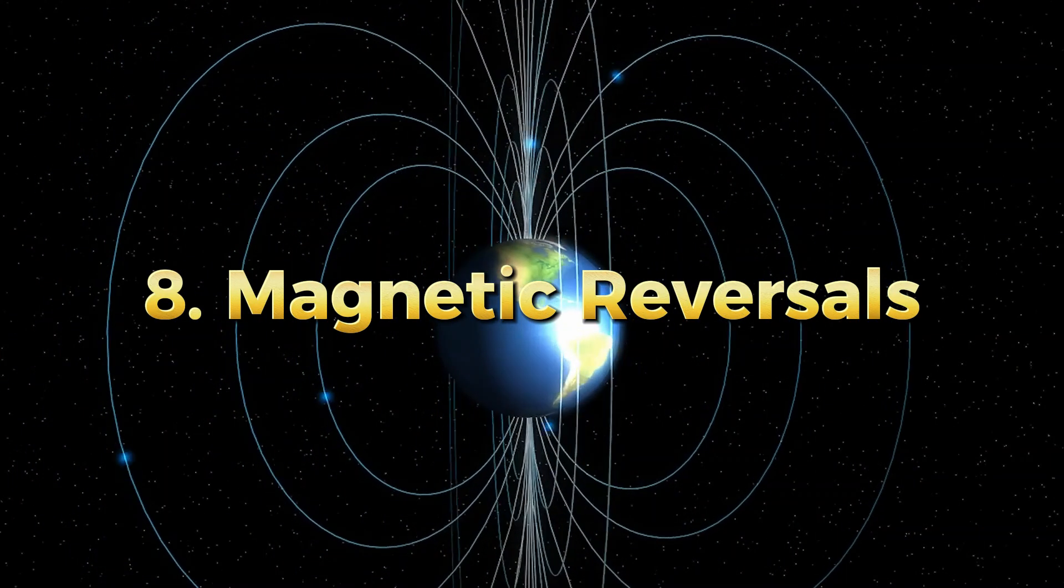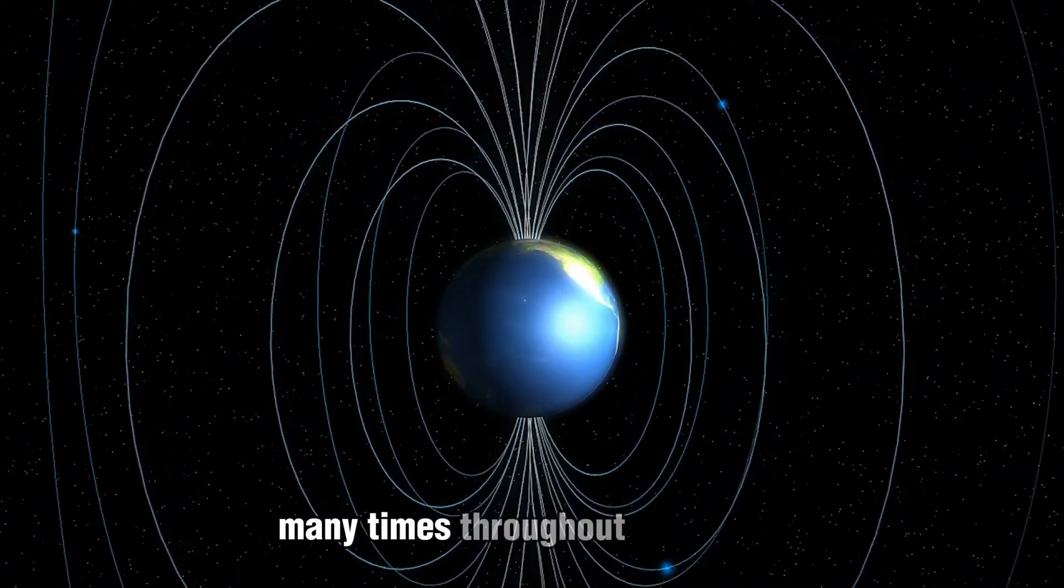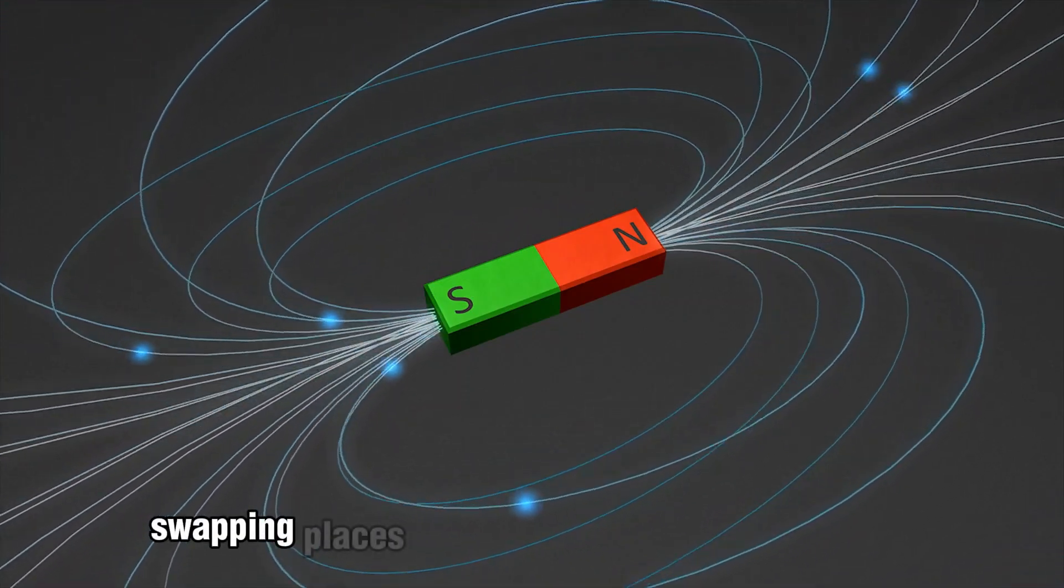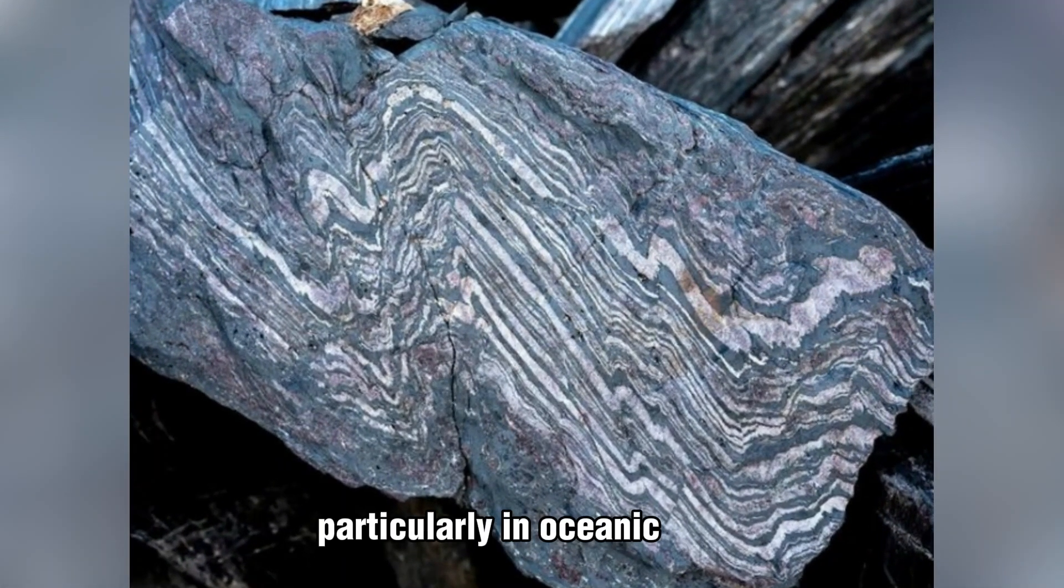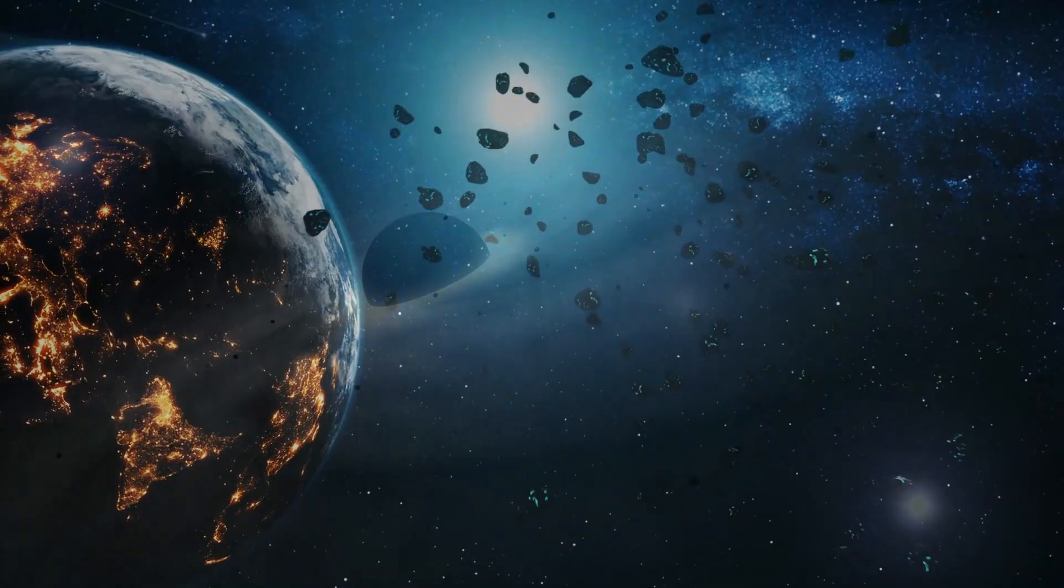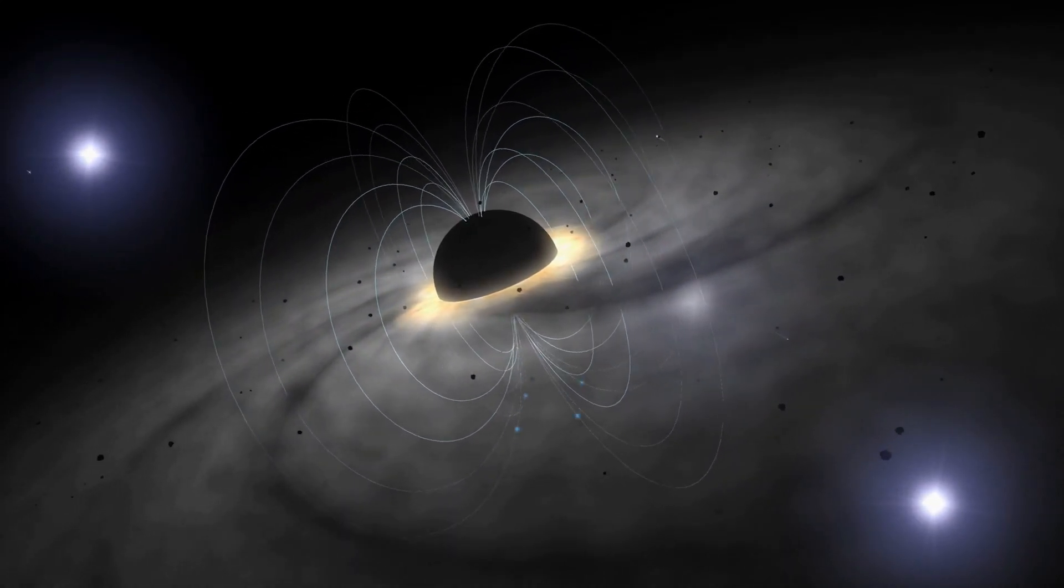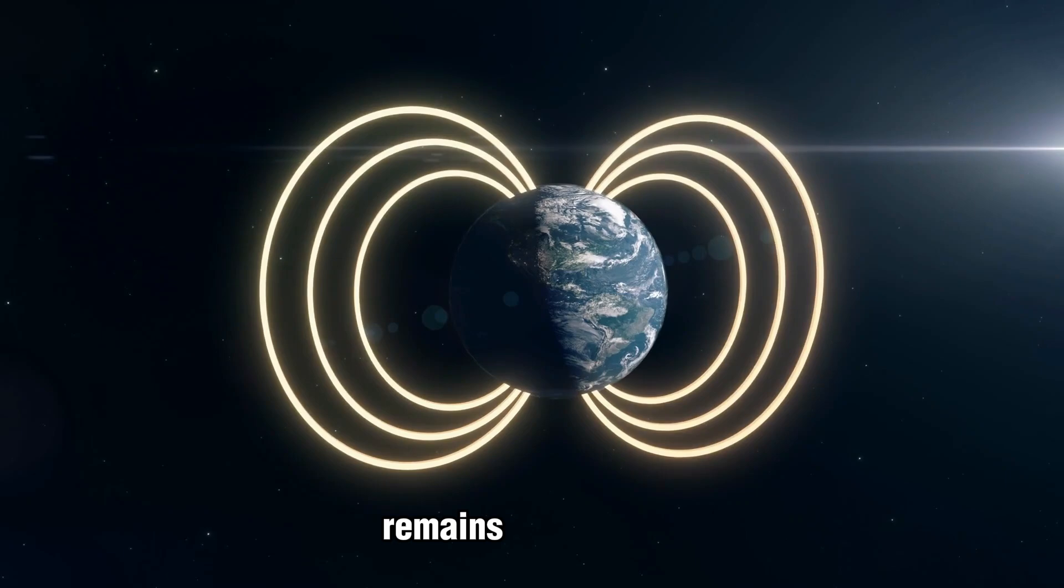Magnetic Reversals: The Earth's magnetic field has flipped its polarity many times throughout its history, with the north and south magnetic poles swapping places. The magnetic signatures of rocks, particularly oceanic crust formed at mid-ocean ridges, record these geomagnetic reversals. Despite the clear evidence of magnetic reversals, our understanding of their exact causes and effects remains incomplete.